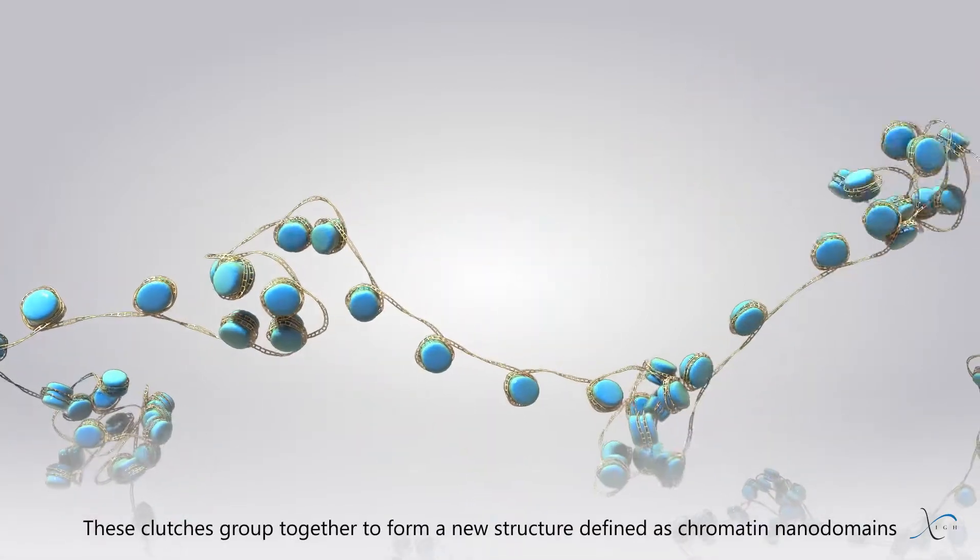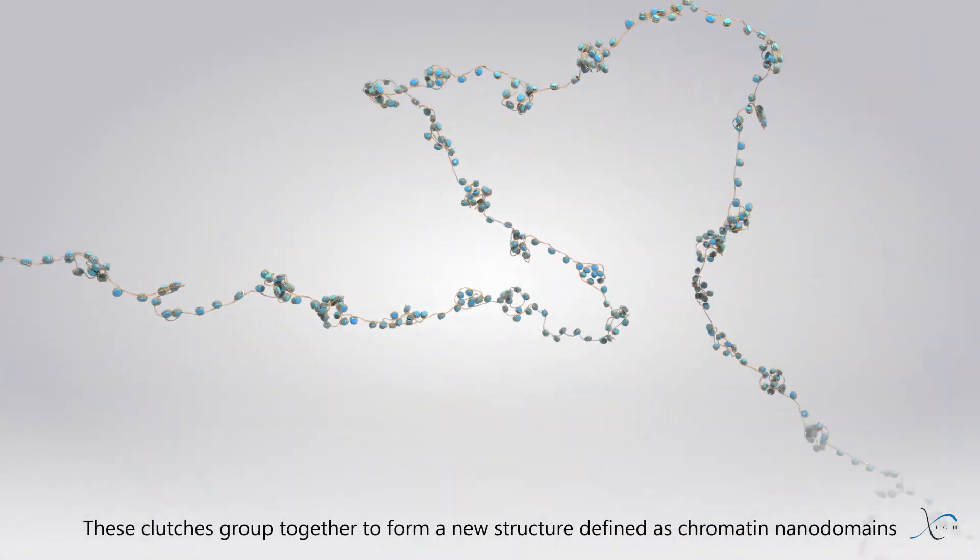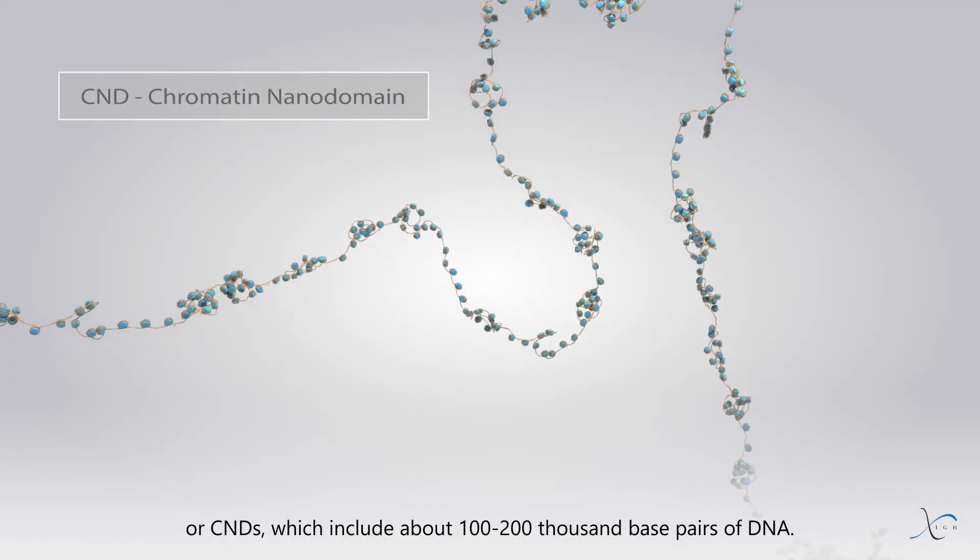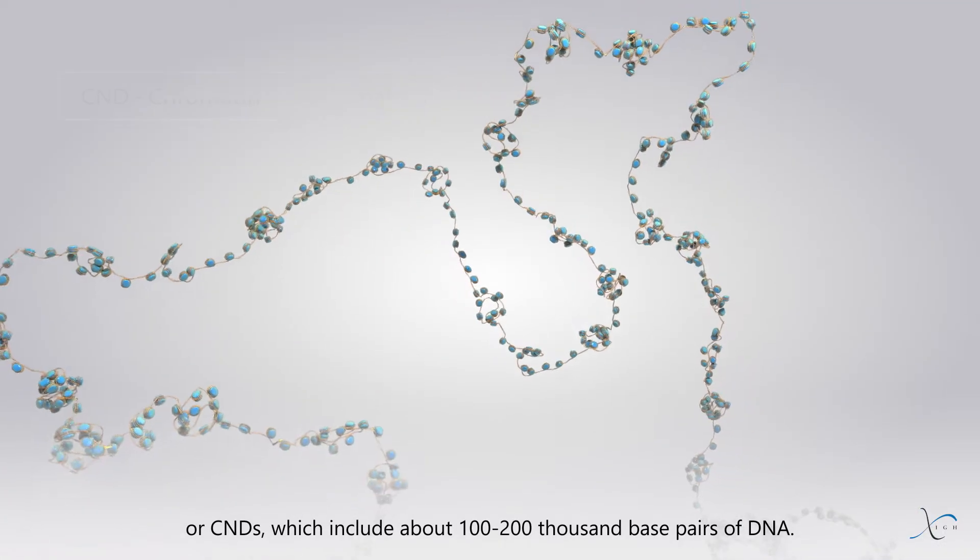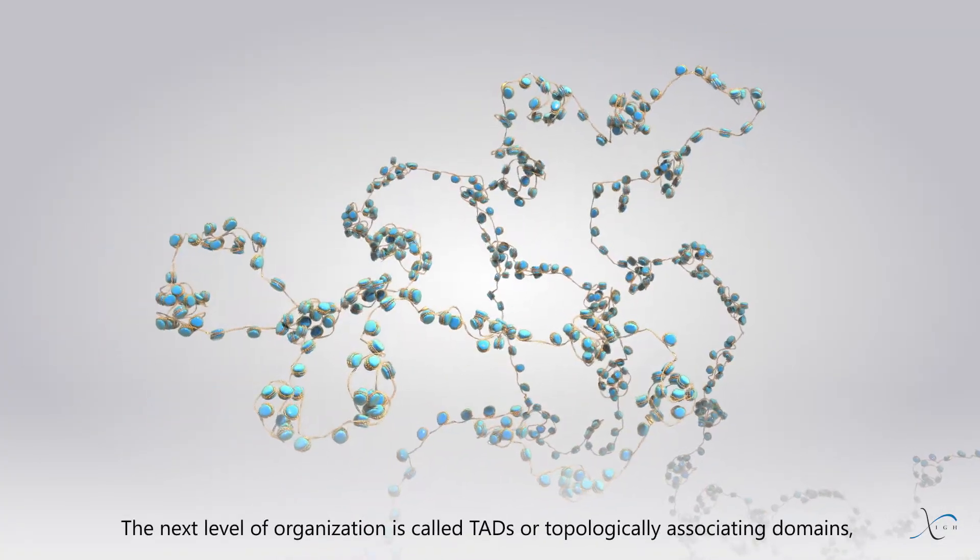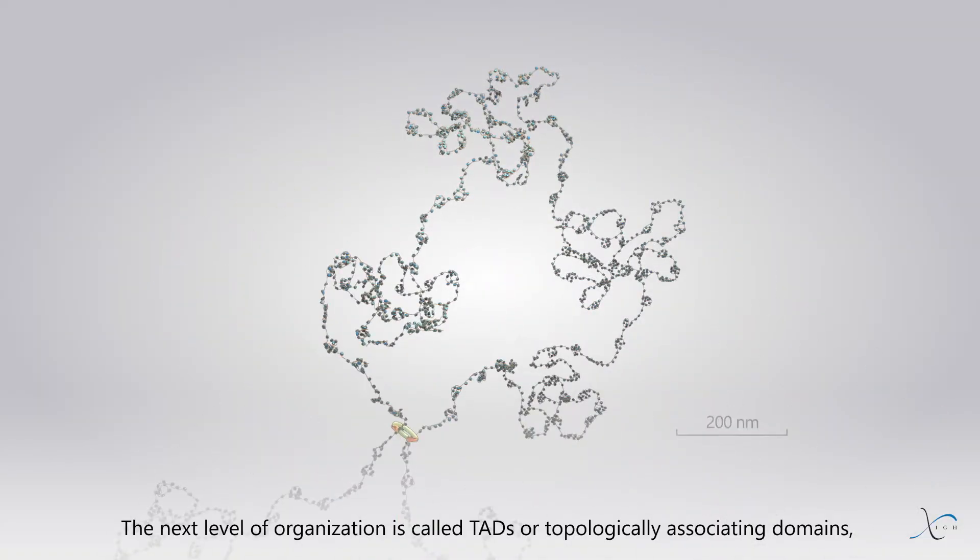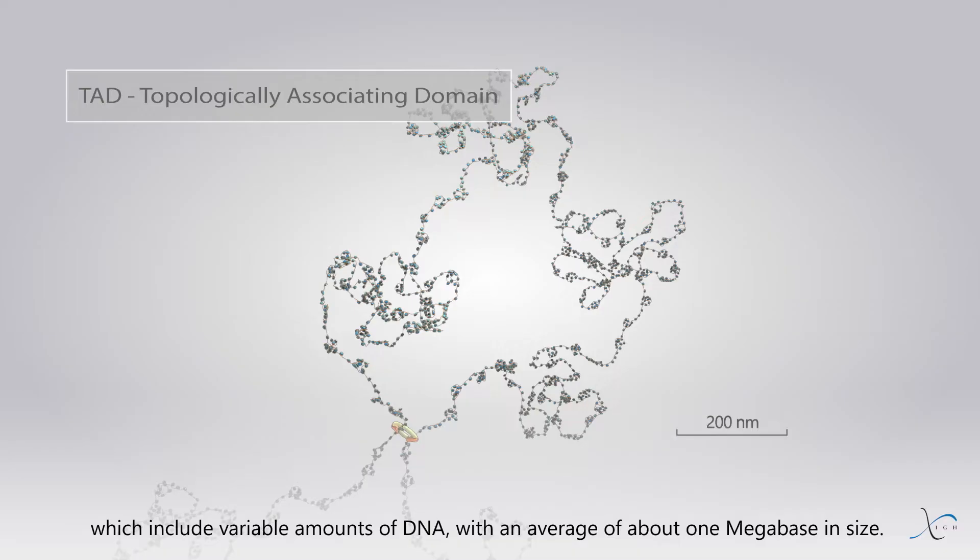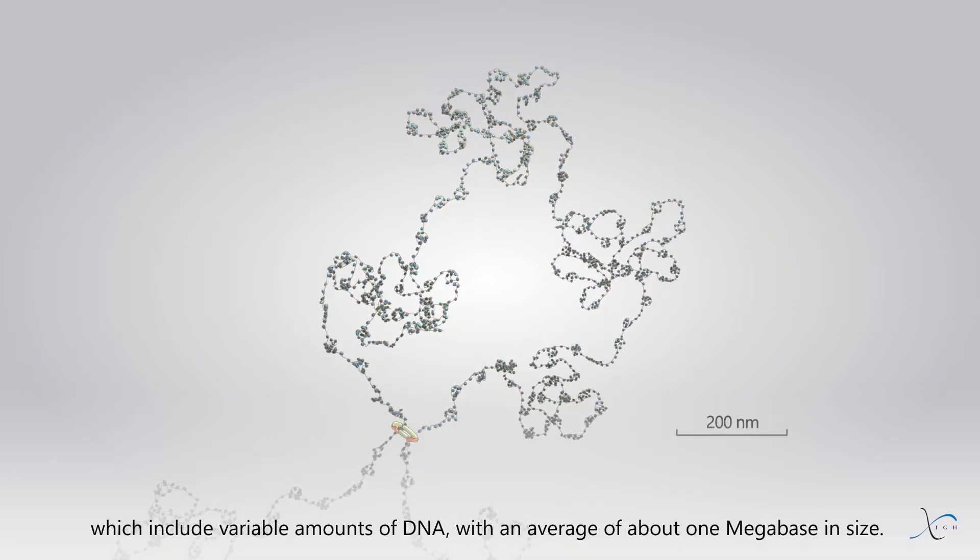These clutches group together to form a new structure defined as chromatin nanodomains, or CNDs, which include about 100,000 to 200,000 base pairs of DNA. The next level of organization is called TADs, or topologically associating domains, which include variable amounts of DNA with an average of about 1 megabase in size.